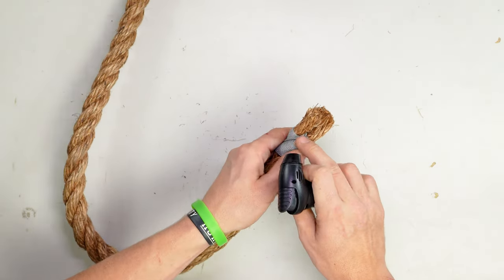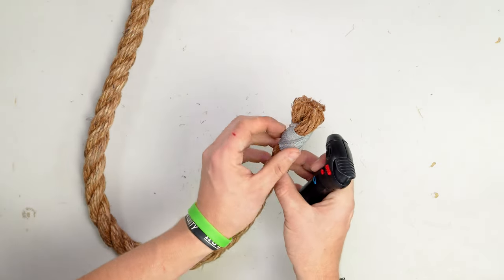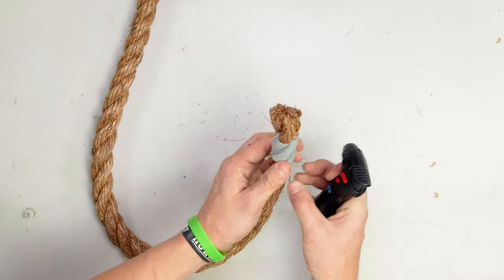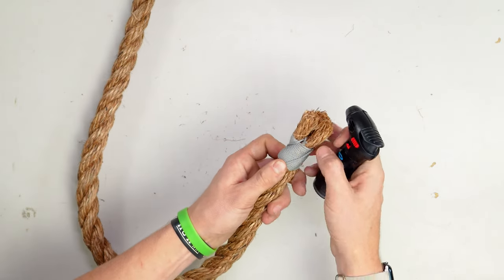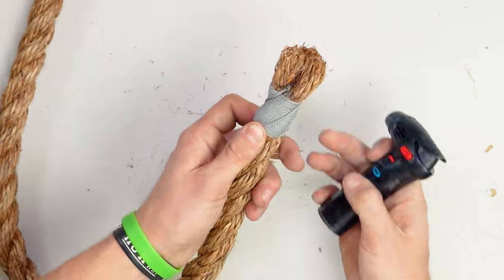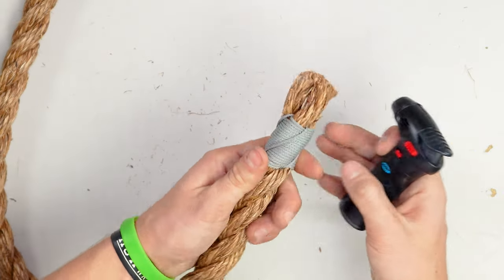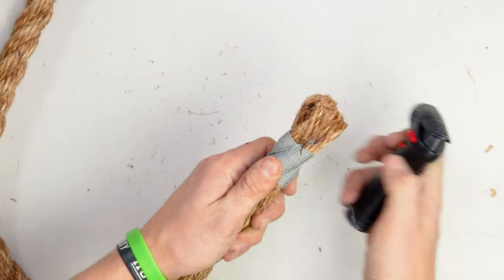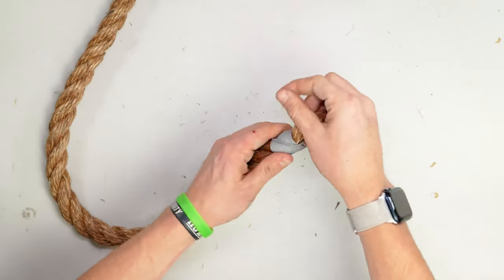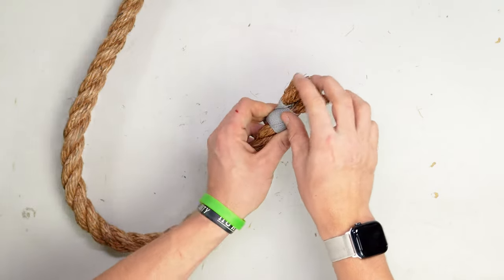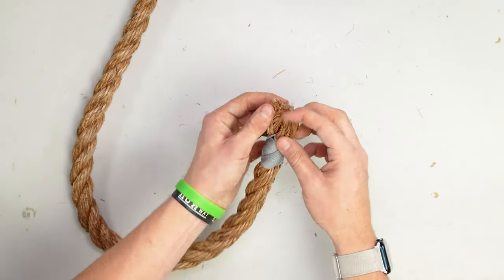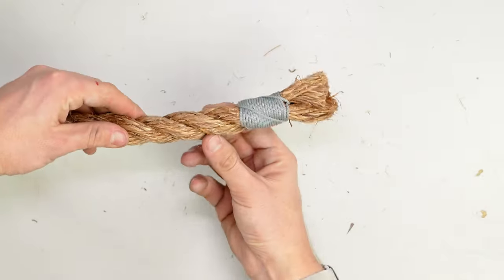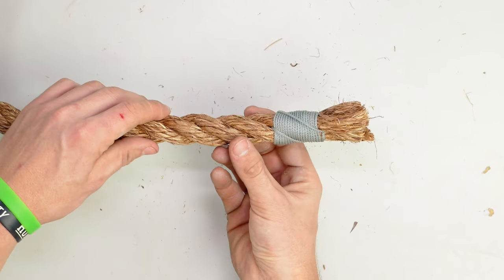Try to burn these ends so that this knot for sure won't come undone but careful not to burn the rope especially if it's a natural fiber rope. You can fray this end out to whatever your desired look is and there's your finished sailmaker's whipping.